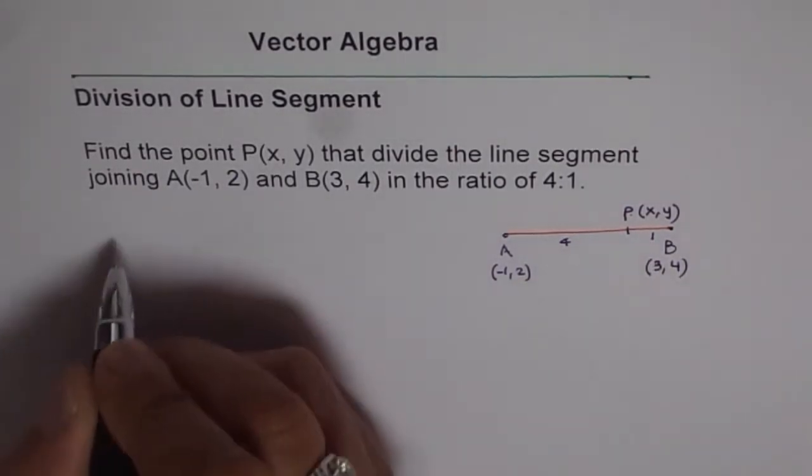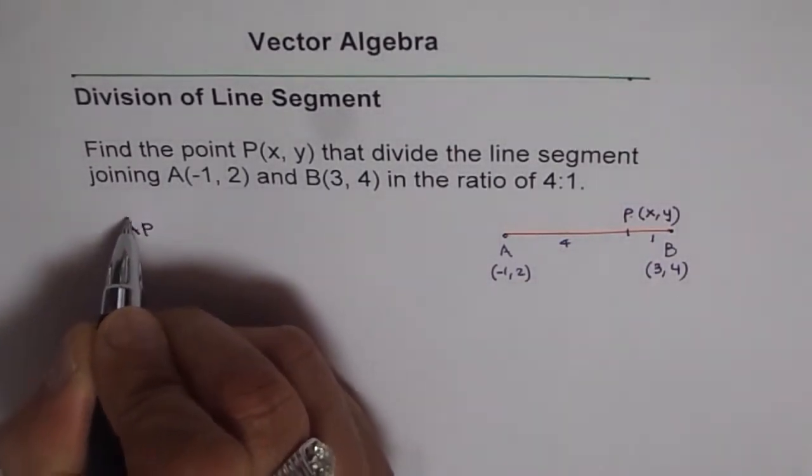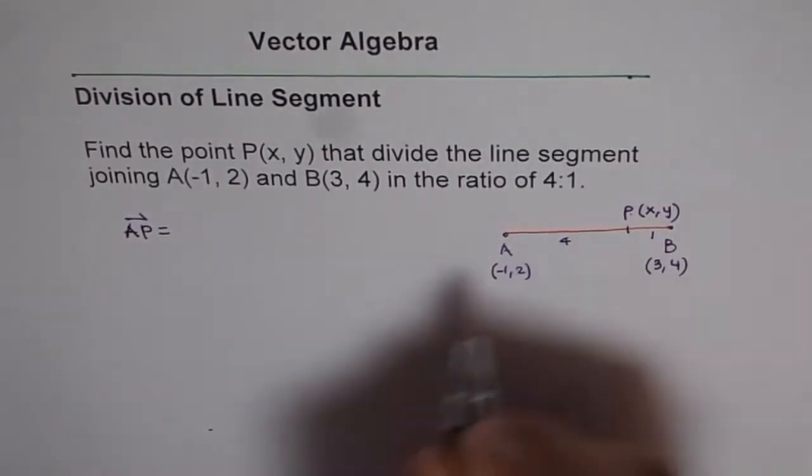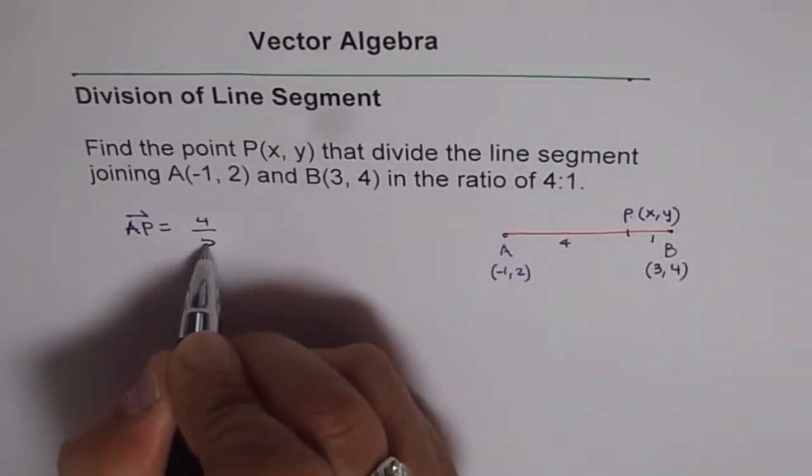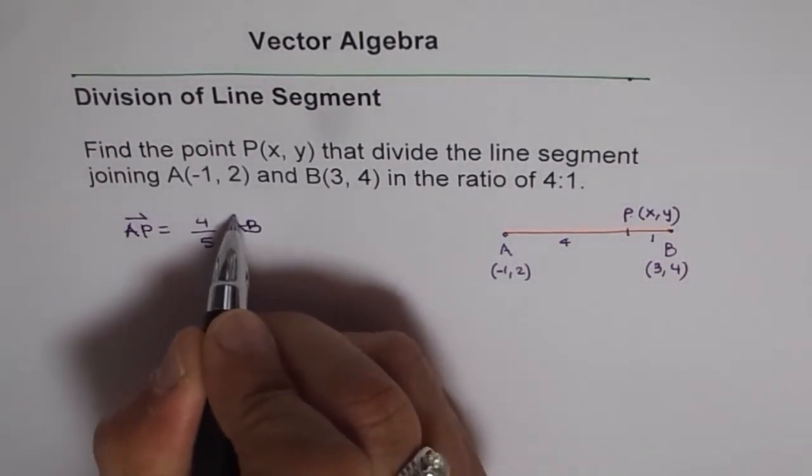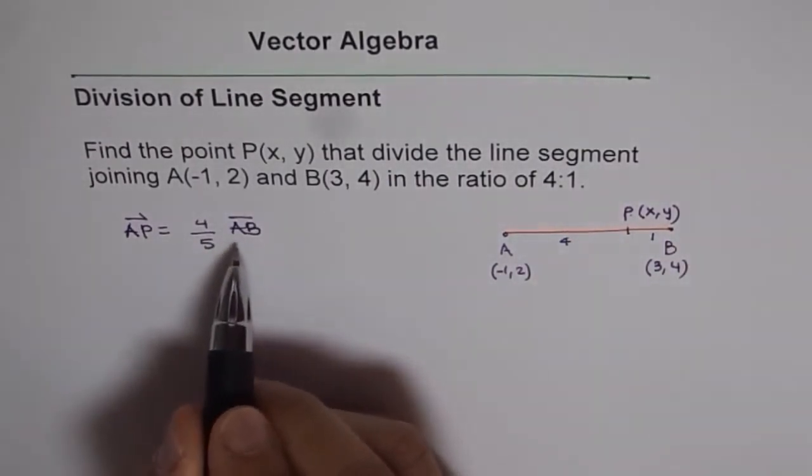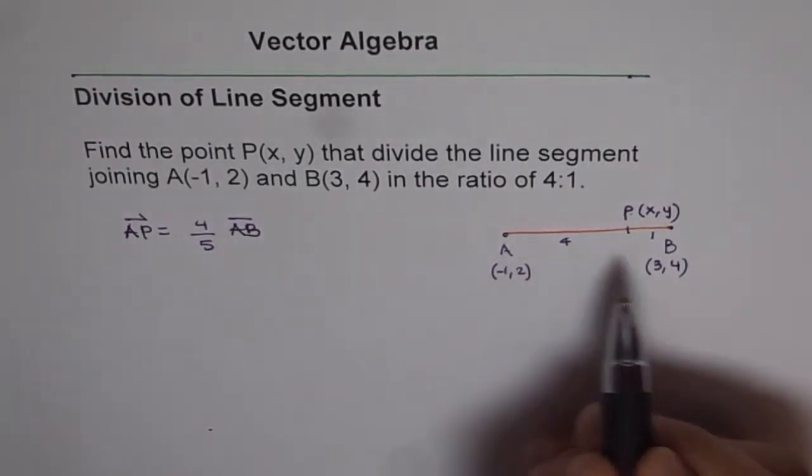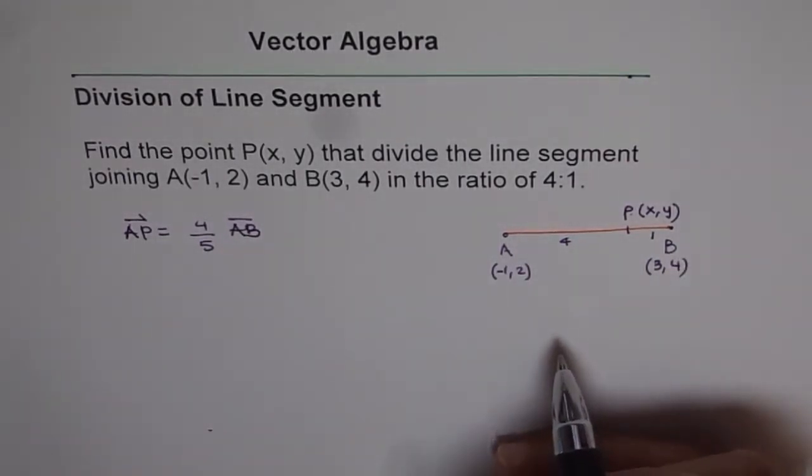we can say that AP is equals to 4 fifths of AB. It is important to write in terms of AB since A and B are known to us. And it will help us to find X and Y.